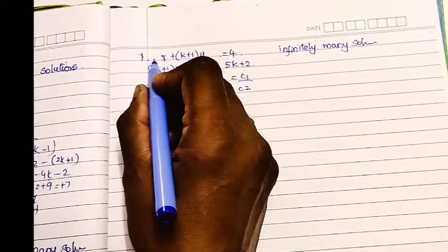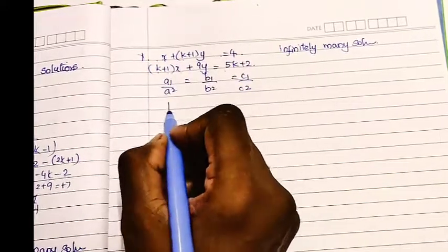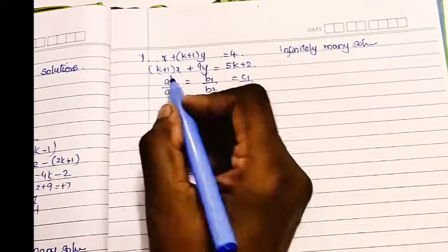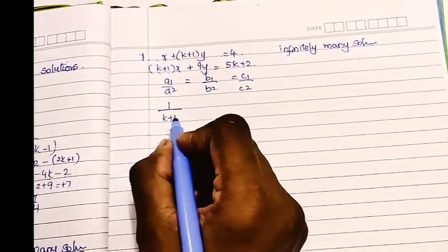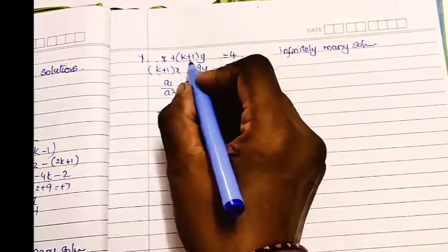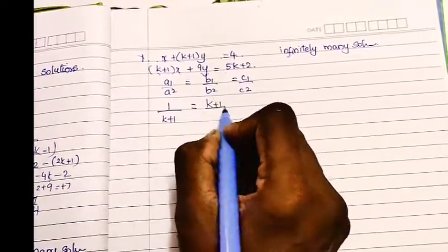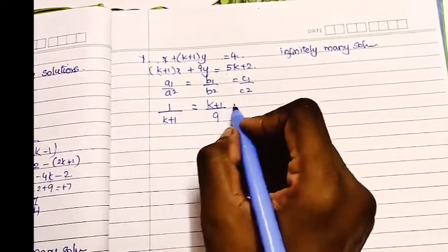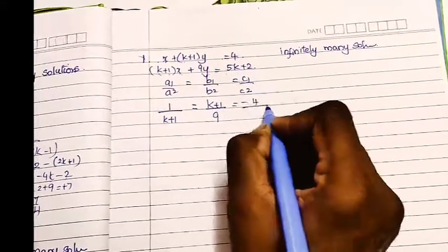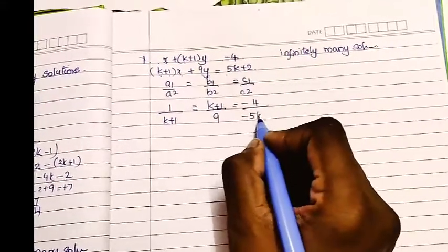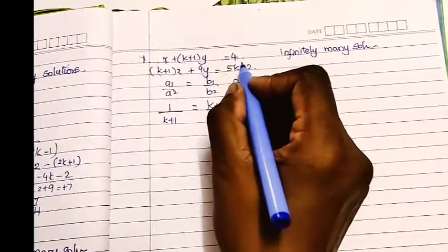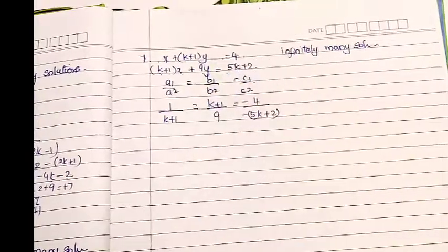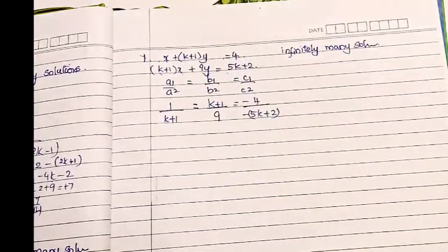The coefficient a1 by the coefficient a2: (k+1) divided by (k+1) equals (k+1) divided by 9. For the constant terms, we have minus 4 over minus (5k+2). We have to write this as zero on the right side.